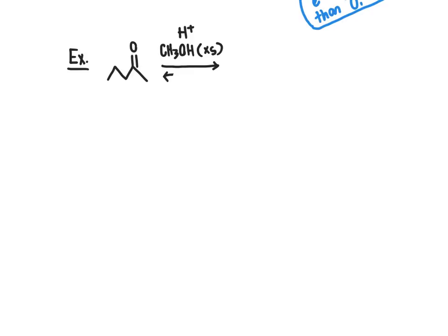Following the general first step of the mechanism, since we have acid present, the very first thing that happens is protonation — specifically, protonation of that carbonyl oxygen. That gives us our very electrophilic, supercharged carbonyl carbon atom, now adjacent to the very electron-withdrawing oxygen atom.